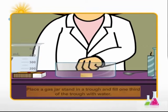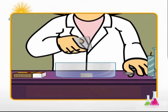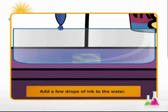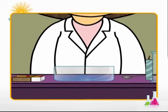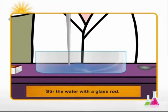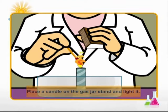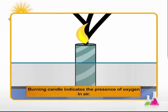Let's begin with the first lab experiment to prove that air is a mixture of several gases. Start by placing a gas jar stand in a trough. Then fill one-third of the trough with water. Now dissolve a teaspoonful of caustic soda in the water. And add a few drops of ink to it. Now stir the water with a glass rod and place a candle on the gas jar stand and light it. Now we know that a candle requires oxygen to burn. So the very fact that our candle is burning indicates the presence of oxygen in the air around us.